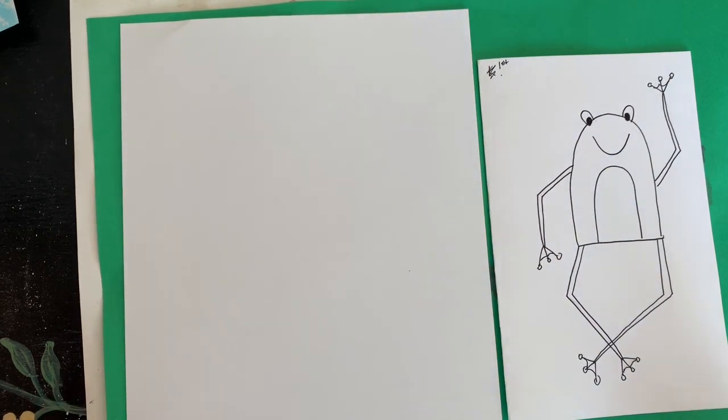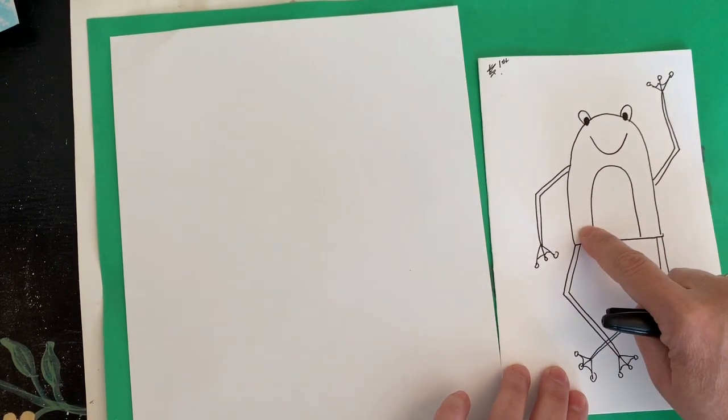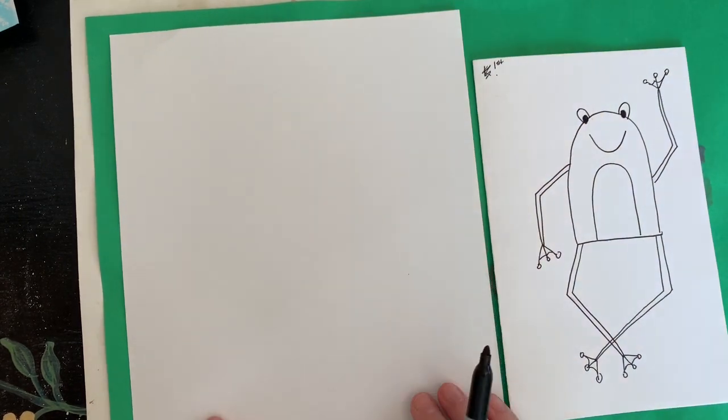This is a fun little frog. He looks like he's waving at us. What we're going to do first is work on the body, and then we're going to add the arms and the legs.